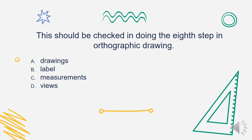Next, what should be checked in doing the eighth step in orthographic drawing? Is it A. Drawings, B. Label, C. Measurement, or D. Views? The answer is Letter A. Drawings — always check your drawings.